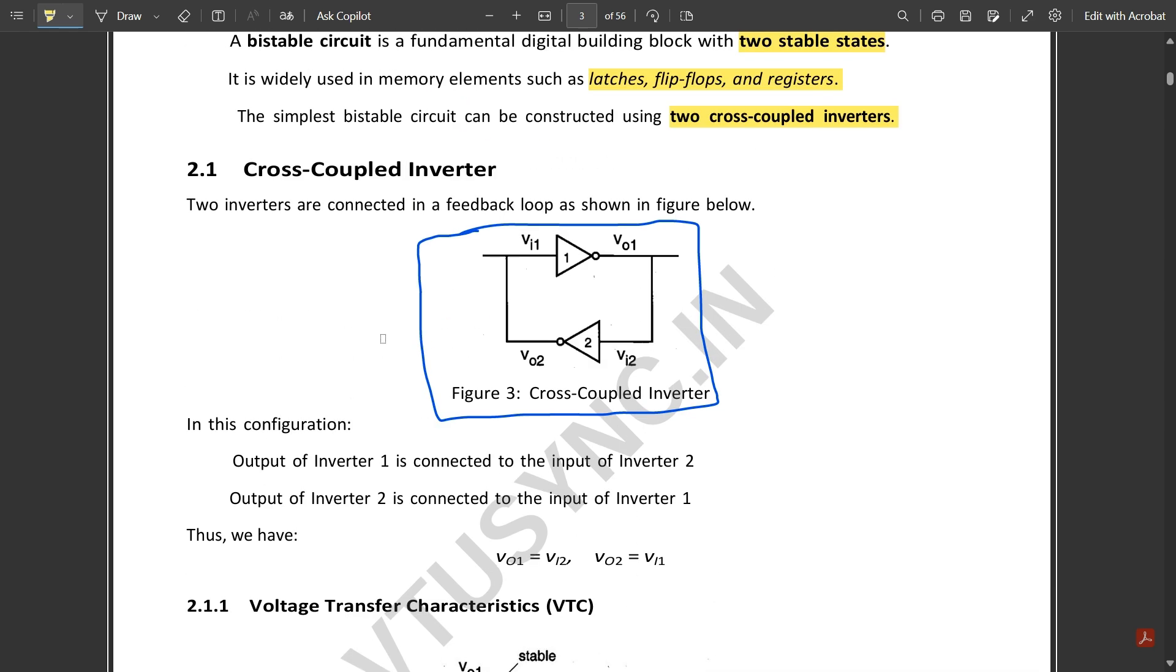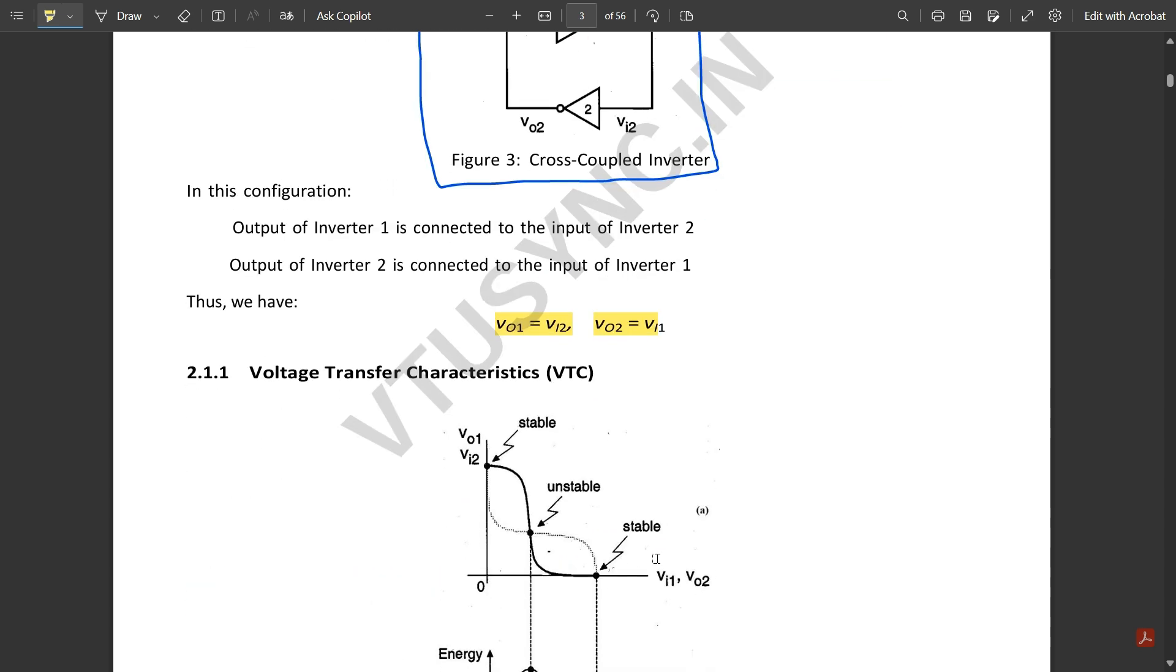So we can conclude that VO1 equals VI2 because the output and input of an inverter would be the same, and VO2 equals VI1 since those two are connected.